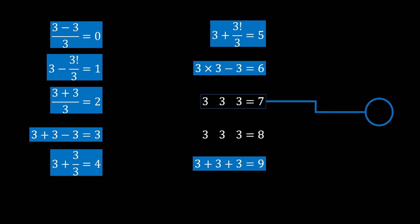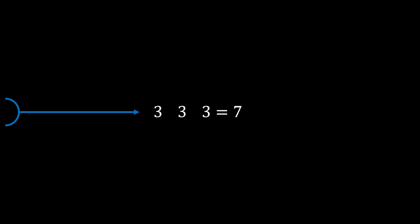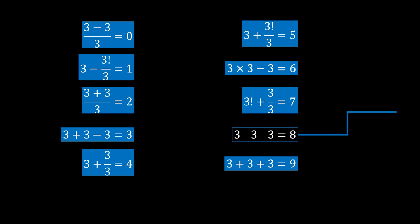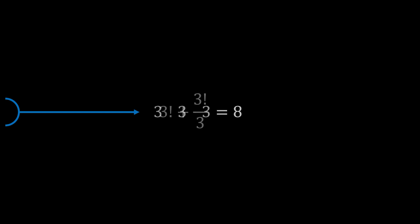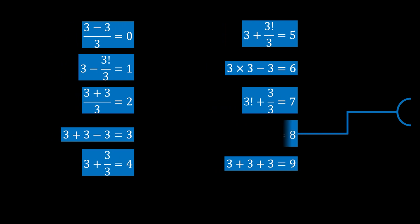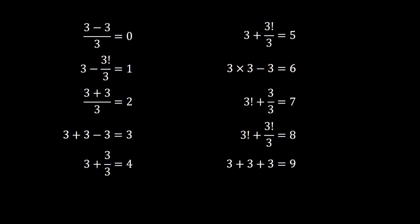For 7: 3! + 3/3 = 6 + 1 = 7. And finally for 8 — the most complicated in this group: 3! + 3!/3 = 6 + 6/3 = 6 + 2 = 8. So there we have all solutions from 0 to 9 using only the number 3 three times.